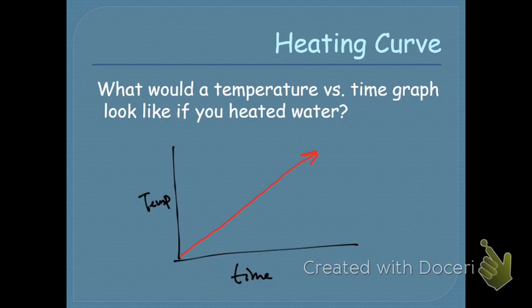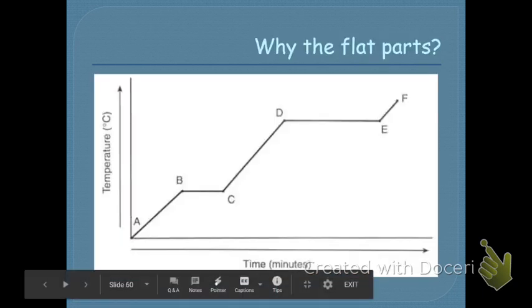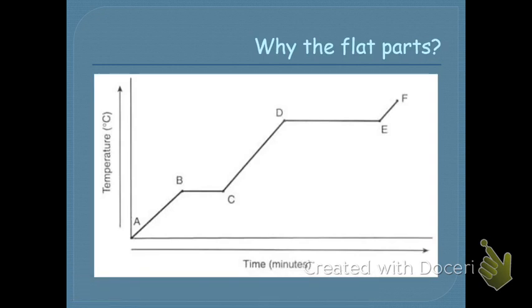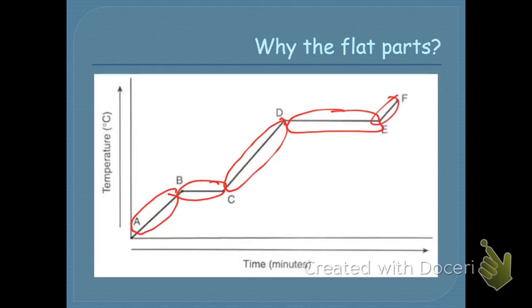The heating curve of water — and actually for any chemical — looks a little different. We understand that temperature goes up as you add more heat, but why are there these random flat parts and what's going on there? By the end of today, you should be able to tell me what's happening at each section of the curve.